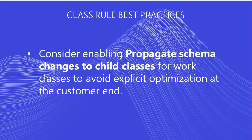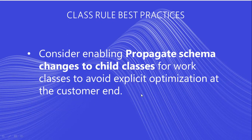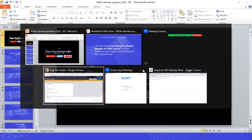The first thing we are going to discuss today is class rules. In class rules, there is something called 'consider enabling propagate schema changes to child class for work classes' to avoid explicit optimization at the customer end. Mainly for work classes we have an option called 'propagate schema change to child classes'. Let's see where exactly that is.